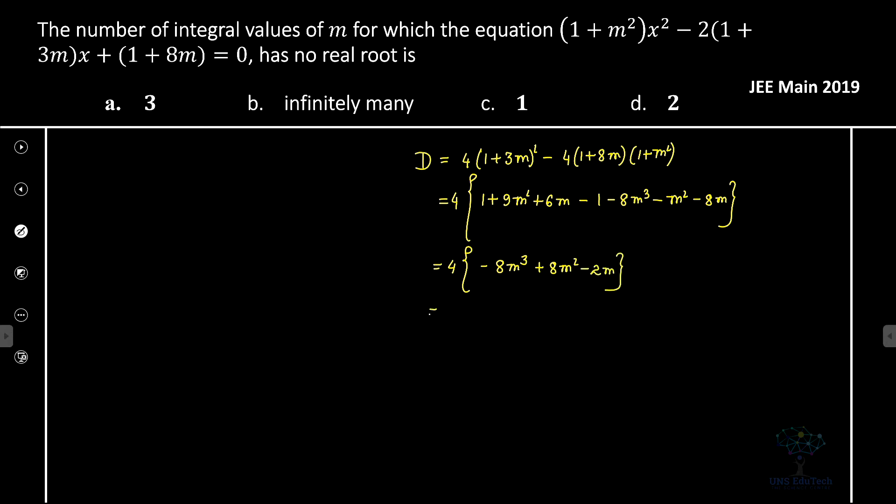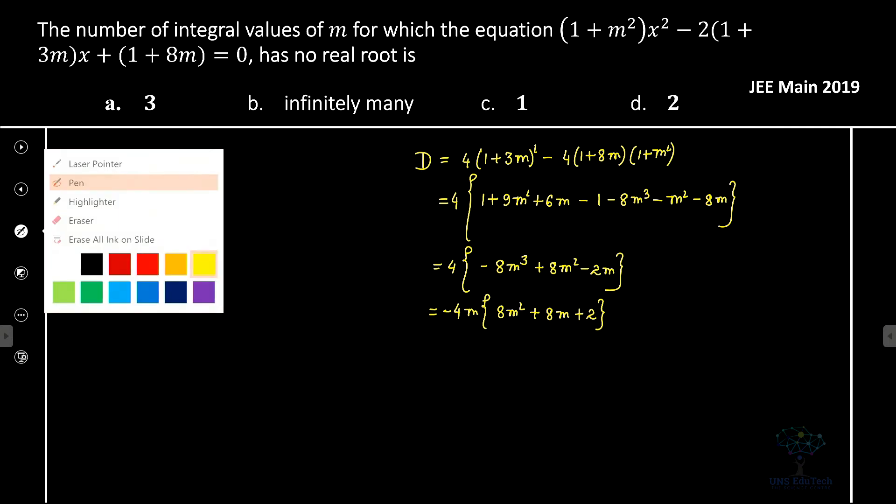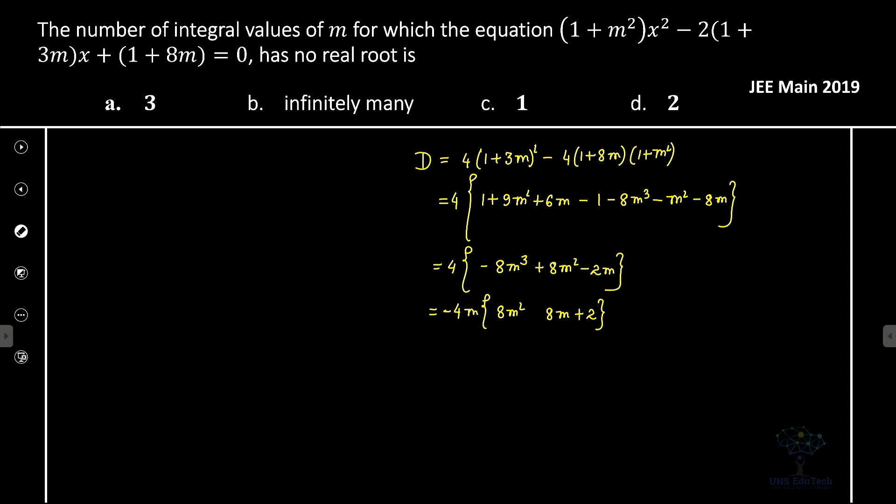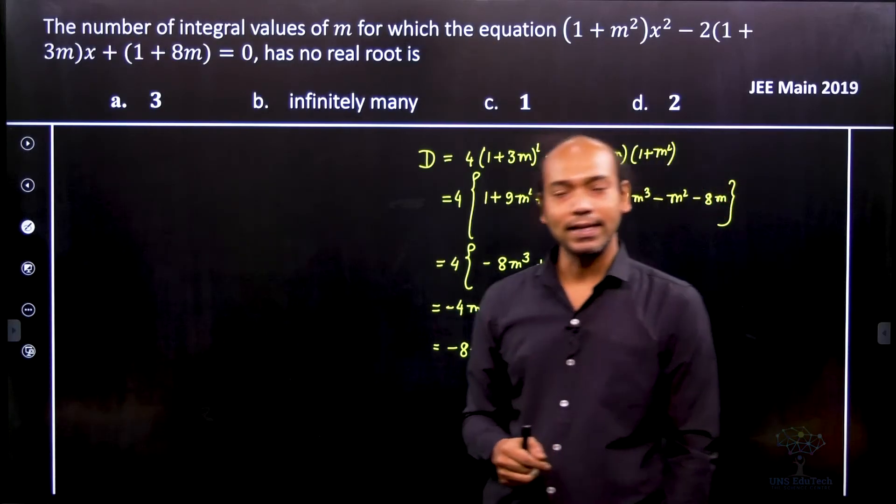Now we'll see that we can easily take minus m common. So if I take minus m common, it will be 8m² plus 8m plus 2. Again, you can see that we can take common of 2. So it became minus 8m(4m² - 2m + 1). That is the possibility of the factorization.